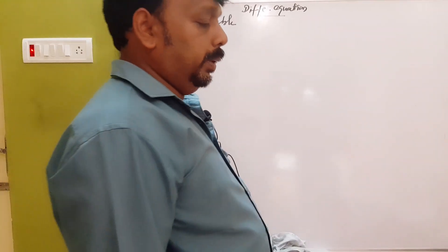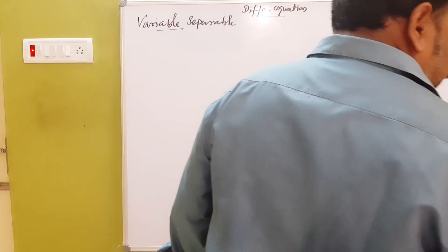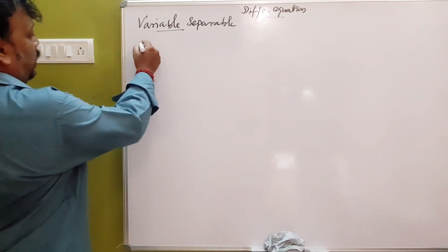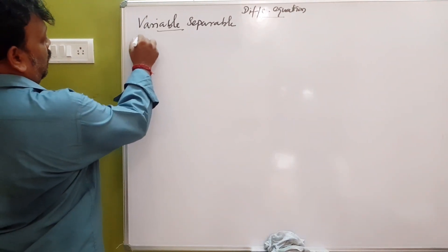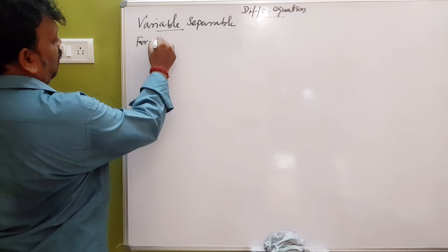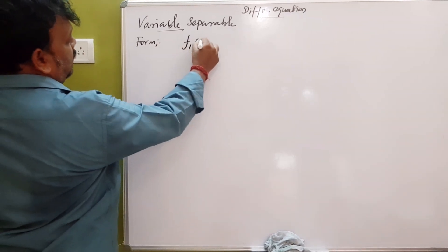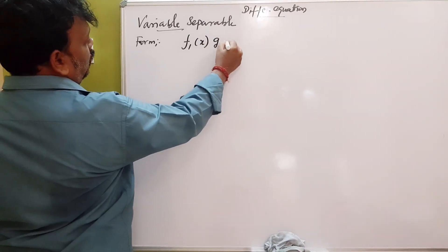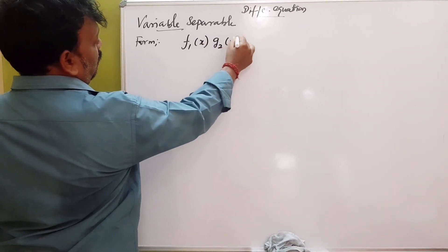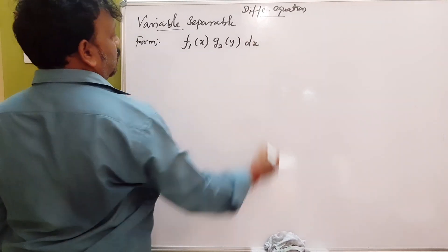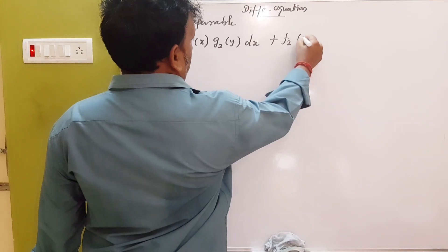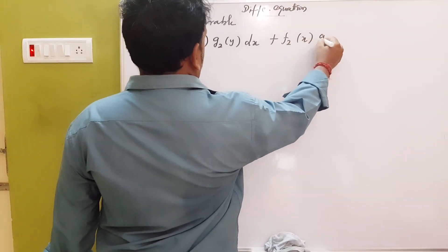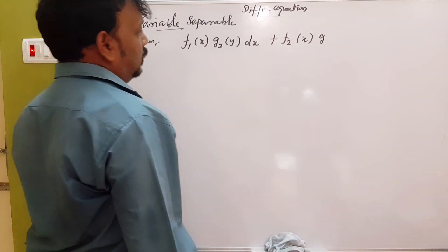How do you create it? It has a pattern. The form is: F1 of x times G2 of y, dx equals F2 of x times G1 of y.